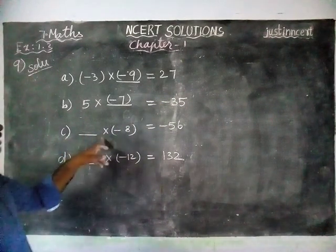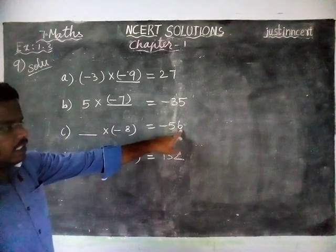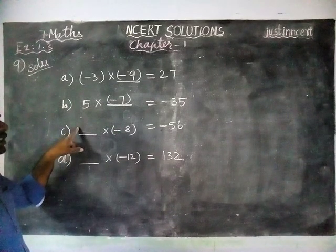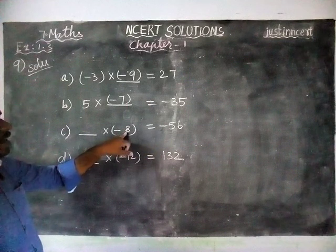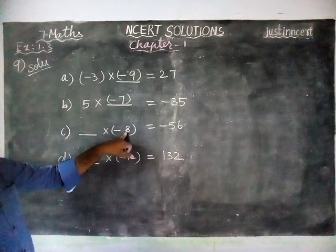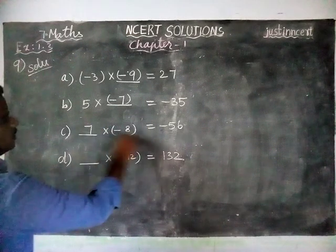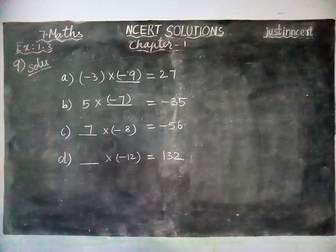Next, option C: ___ × (-8) = -56. Here we are getting minus answer. Minus 8 is there, so definitely this number is plus. When we are dividing 56 by 8, we are getting 7. So 8 × 7 = 56. Plus into minus equals minus 56.